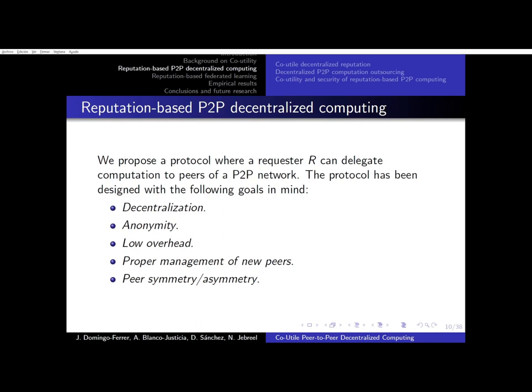We also expect a low overhead on managing reputations. We also aim for a proper management of new peers, so that peers that have low reputations cannot create new identities to whitewash themselves. And finally, peer symmetry or asymmetry: peers that request computation may be peers from inside the network or an external peer.